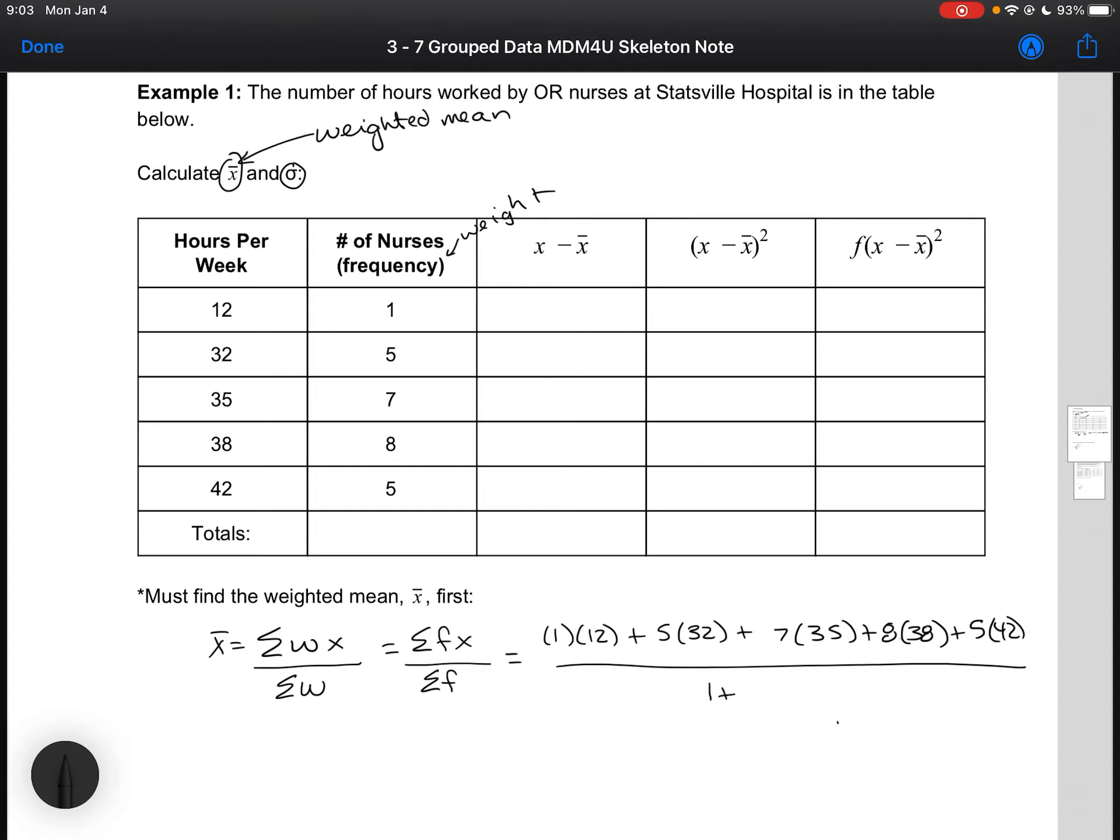Or the sum of our weights. So the sum of that second column, 1 plus 5 plus 7 plus 8 plus 5. This is going to give us 931 over 26, and this is going to give us our weighted mean as 35.8, rounding to 1 decimal place. Double check that you do get the same value on your calculator.